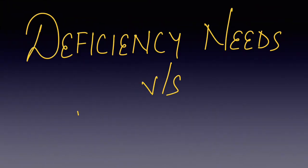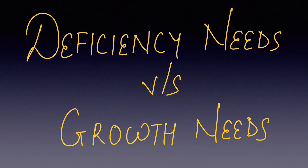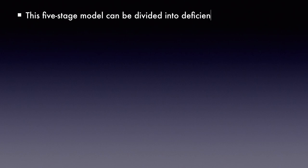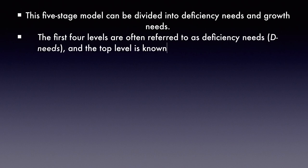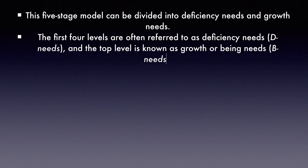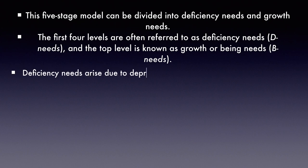Before discussing all five needs in detail, let's look at the concept of deficiency needs versus growth needs. The five-stage model can be divided into deficiency needs and growth needs. The first four levels are often referred to as deficiency needs — D-needs — and the top level is known as growth or being needs — B-needs. Deficiency needs arise out of deprivation.